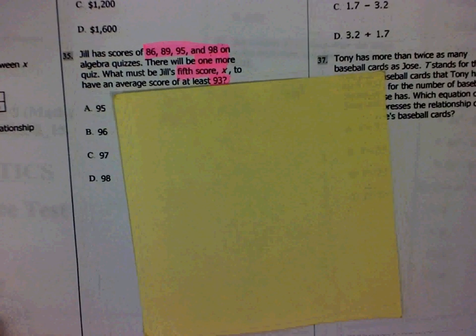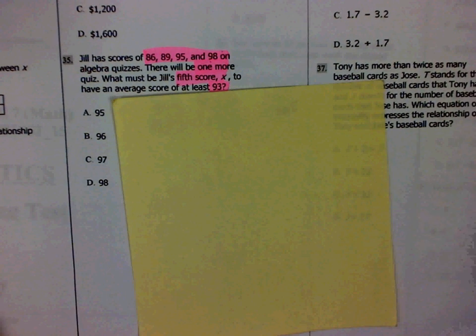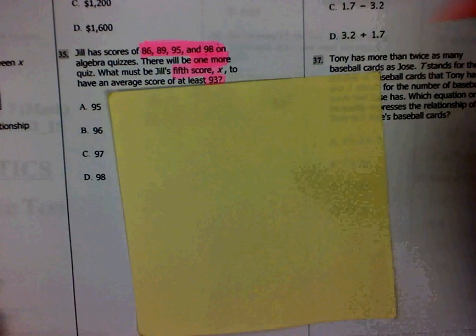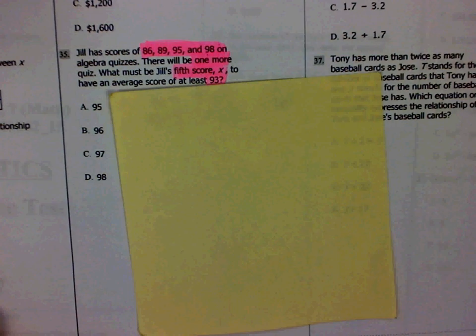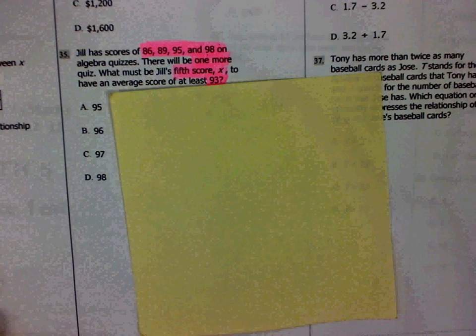Jill has scores of 86, 89, 95, and 98 on algebra quizzes. There will be one more quiz. What must Jill's fifth score, which we're going to call X, be to have an average score of at least 93?